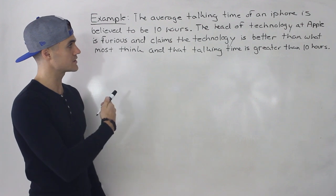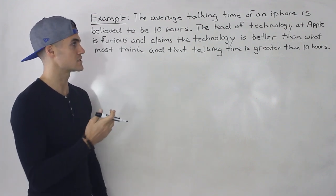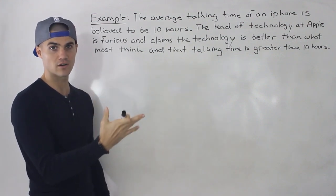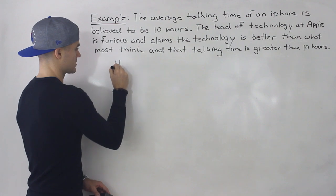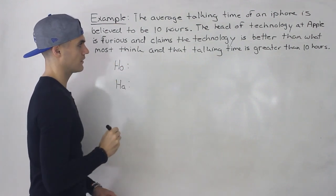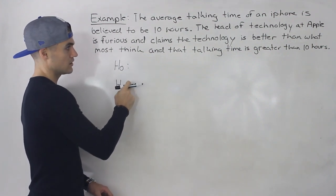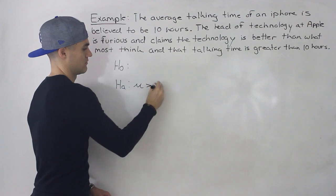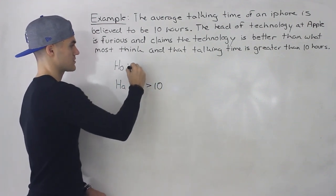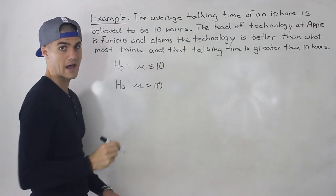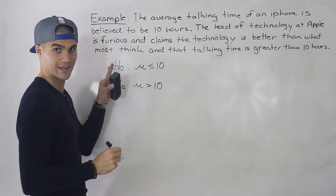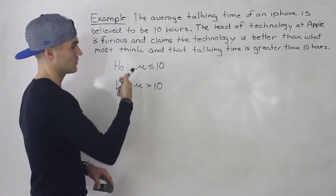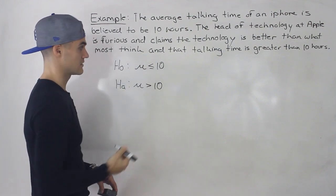Let's do another scenario. The average talking time of an iPhone is believed to be 10 hours. The head of technology at Apple is furious and claims that the technology is better than most think, and that talking time is greater than 10 hours. So the alternative hypothesis is that the talking time is greater than 10 hours — that's what the head of technology is claiming. The null is that it's 10 hours or less.